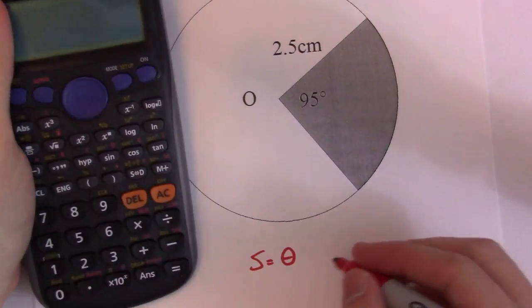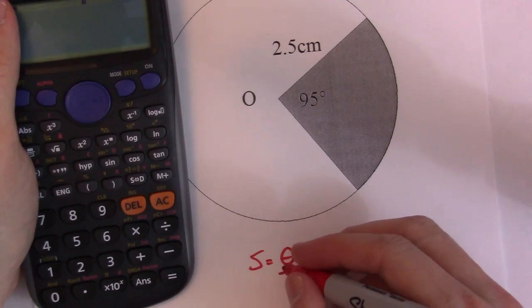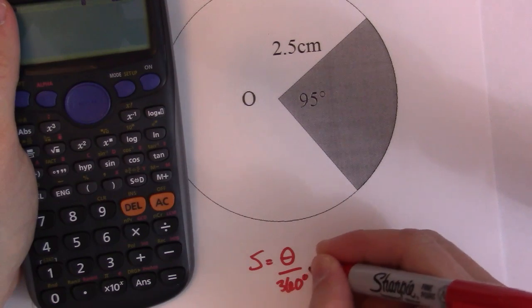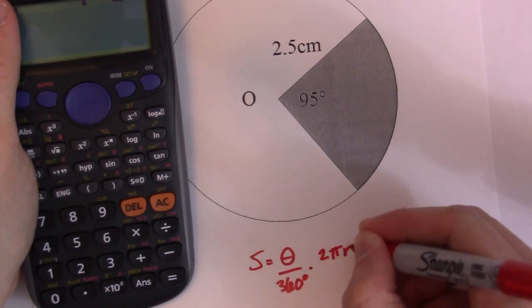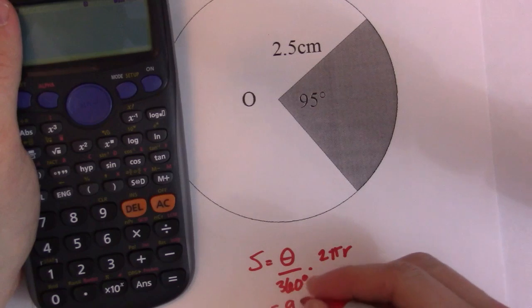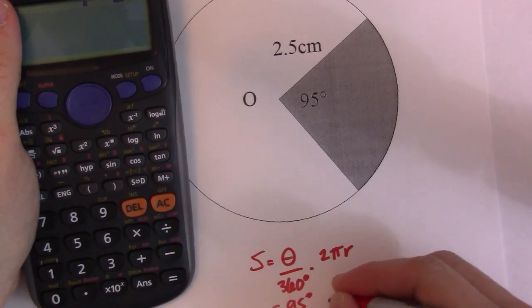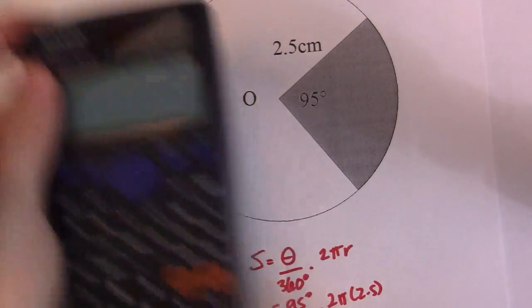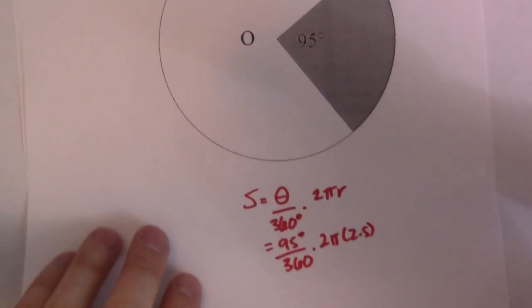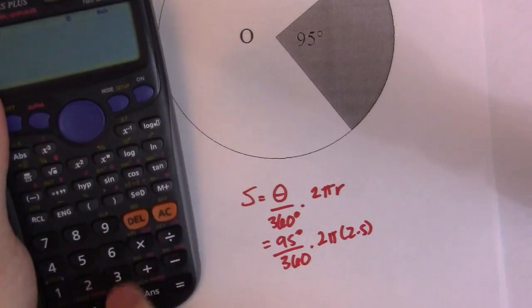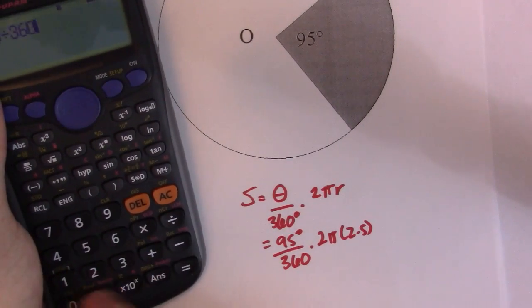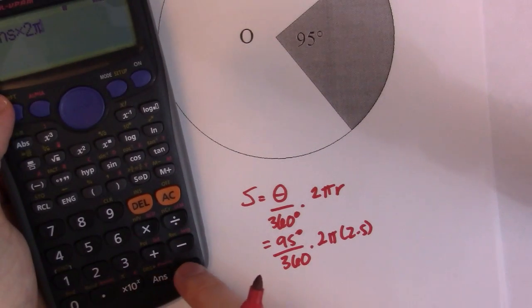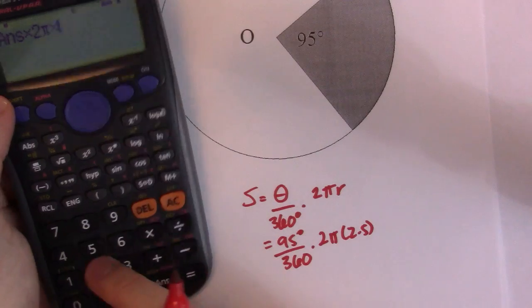S is equal to theta divided by 360 degrees times 2 pi r. So I've got my theta, it's really simple if you've got all the stuff given, divided by 360 times 2 pi times 2.5. So it's a matter of just working that out now. So go ahead and put it in my calculator. 95 divided by 360 times 2 pi times 2.5.